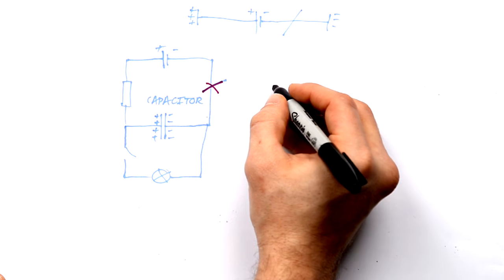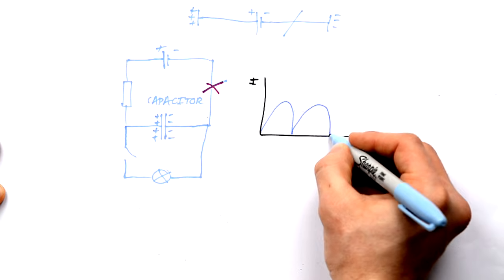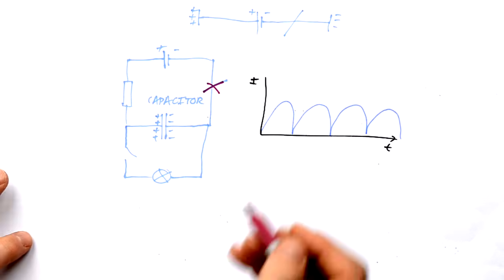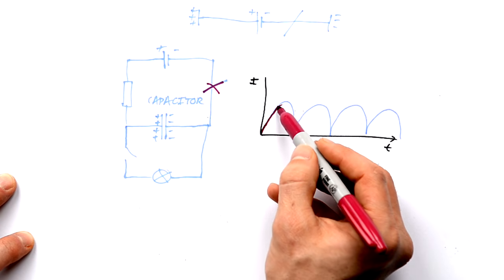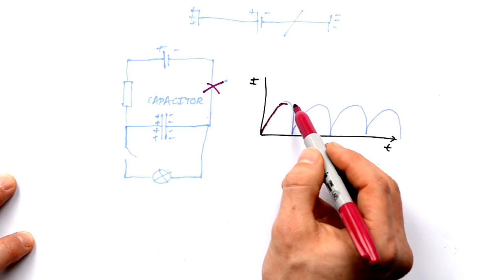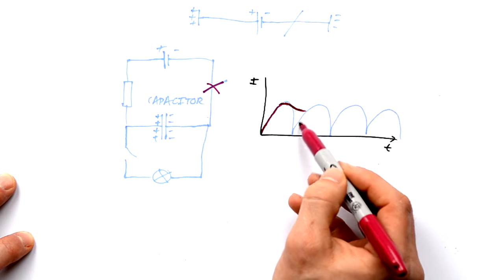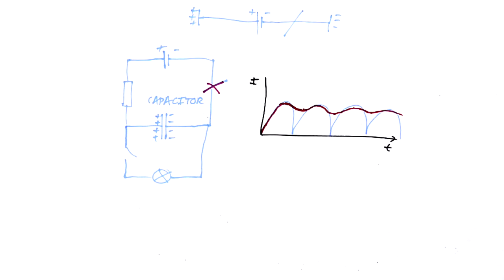Capacitors can also be used to smooth out AC current that has been rectified. If the rectified current has a bumpy shape, that's not ideal for electronics — we want smooth DC. As the current goes up it charges the capacitor, and then at the peak the capacitor discharges slowly instead of the current dropping straight away, smoothing it out. Capacitors are also used in radios and computers for timing, which we'll come back to later.